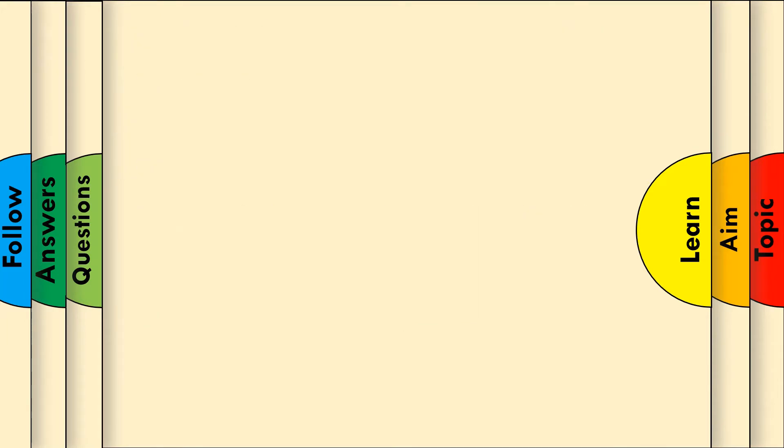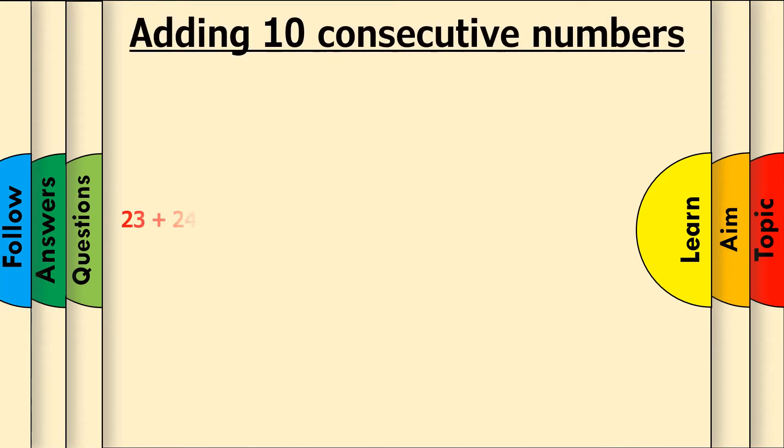Here's another example. Add all the numbers from 23 to 32 together. If you're feeling confident, try answering this question on your own first using the trick we just learned by pausing the video before taking a look at our explanation.